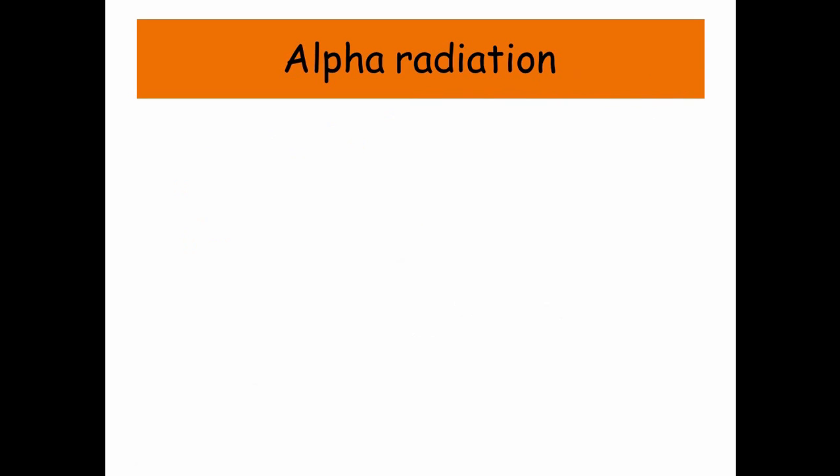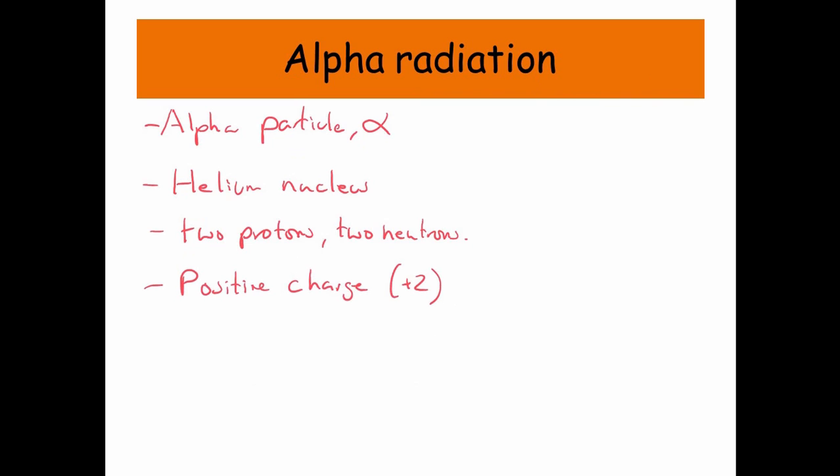So what is alpha radiation? Well, it's a particle, which is basically a helium nucleus going very fast, which is made of two protons and two neutrons. It's got a positive charge of plus two, well that's a relative charge because of the two protons.